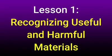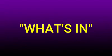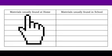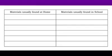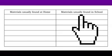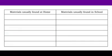Lesson 1: Recognizing useful and harmful materials. We are now on page 3. On your paper, write the title 'What's In' and copy the table that I am showing on the screen. Pause the video if you need to while copying. In the table that you just copied, under the left column, list the names of the items I will show you that are commonly found at home. Under the right column, list the names of the items that are commonly found at school.